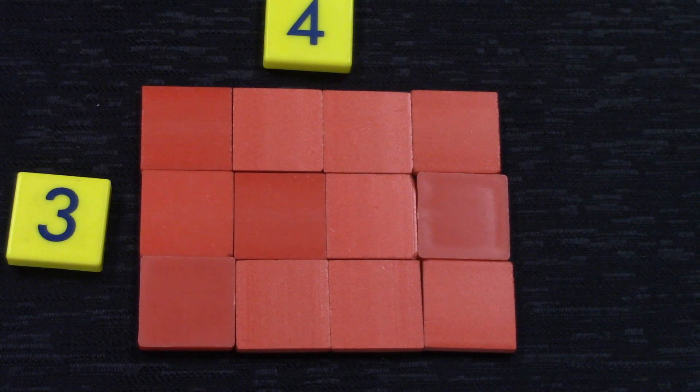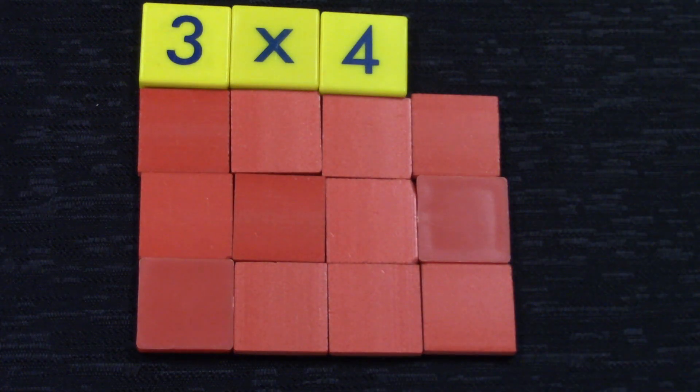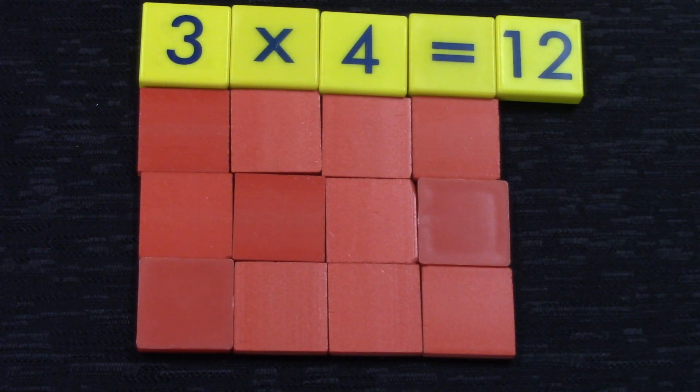How many tiles are in a three by four array? If you knew there were 12, give yourself a big thumbs up. We would write a multiplication sentence this way. Three times four equals 12.